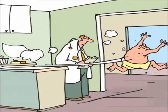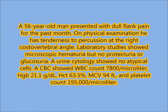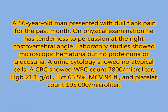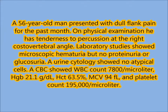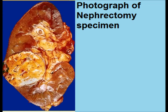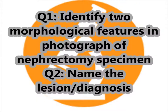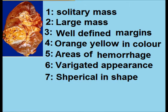The clinical history: a fifty-six year old male presented with dull flank pain for the past month. On physical examination, he had tenderness to percussion at the right costovertebral angle. Lab studies showed microscopic hematuria but no proteinuria. This is the photograph of the nephrectomy specimen. The morphological features are: a solitary mass with well-defined margins, orange-yellow in color, areas of hemorrhage, variegated appearance, and spherical in shape.